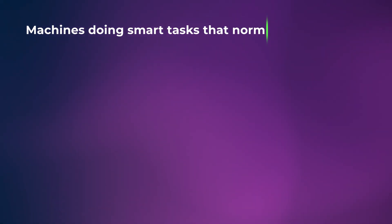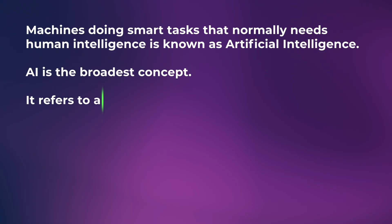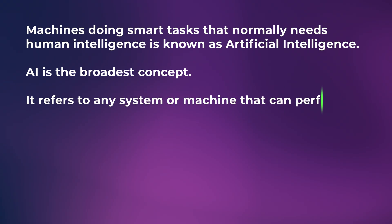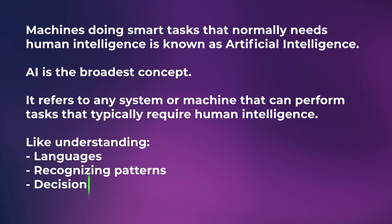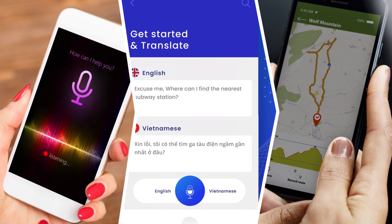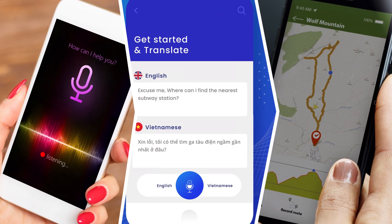Let's start with Artificial Intelligence, known as AI. Machines doing smart tasks that normally require human intelligence is known as AI. AI is the broadest concept here — it refers to any system or machine that performs tasks that typically need human intelligence, like understanding language, recognizing patterns, decision making, or solving problems. Think of Siri, Google Translate, or even GPS suggesting the fastest route — all are AI.